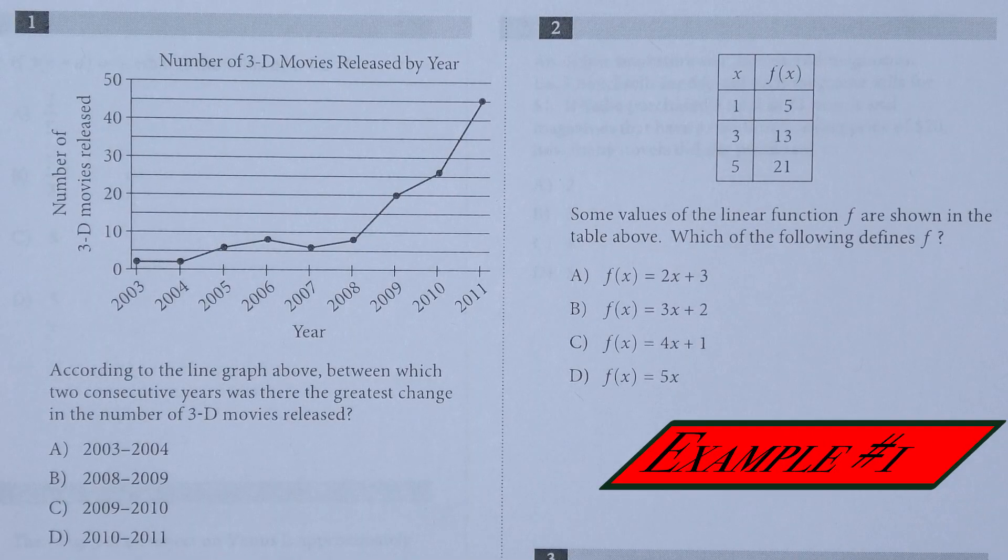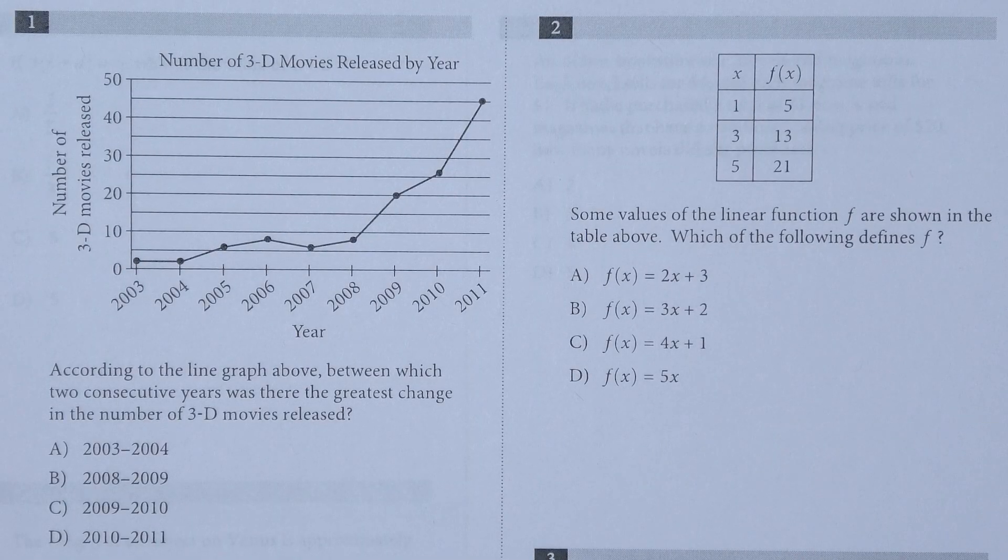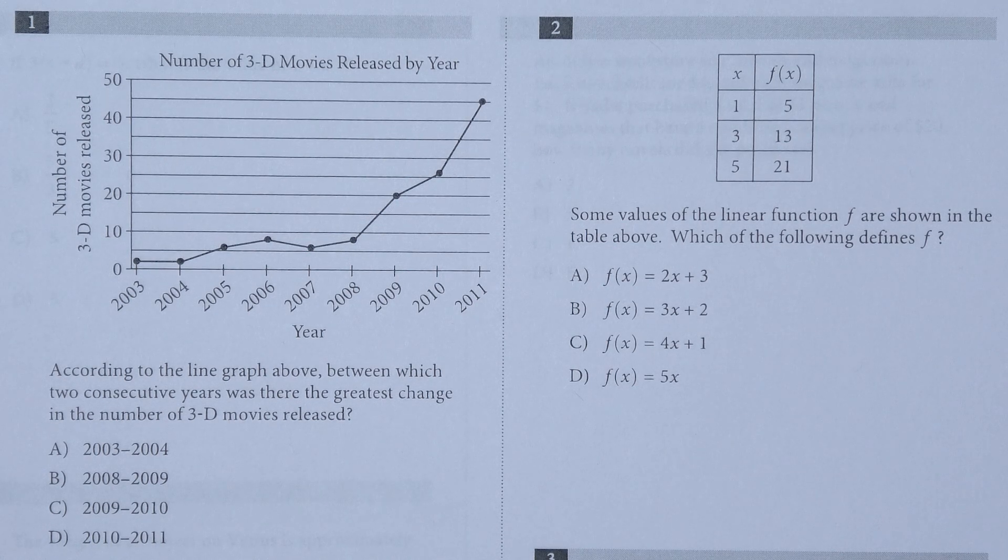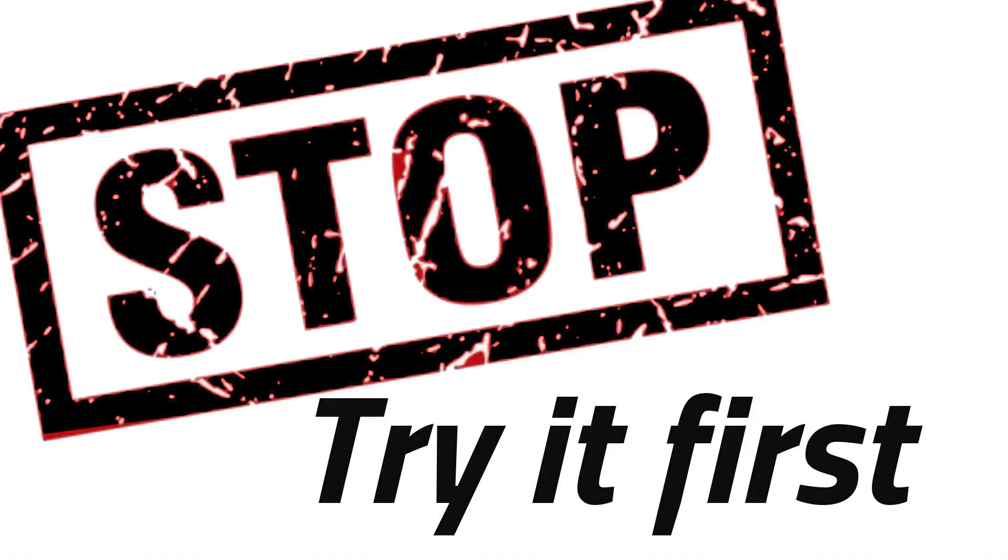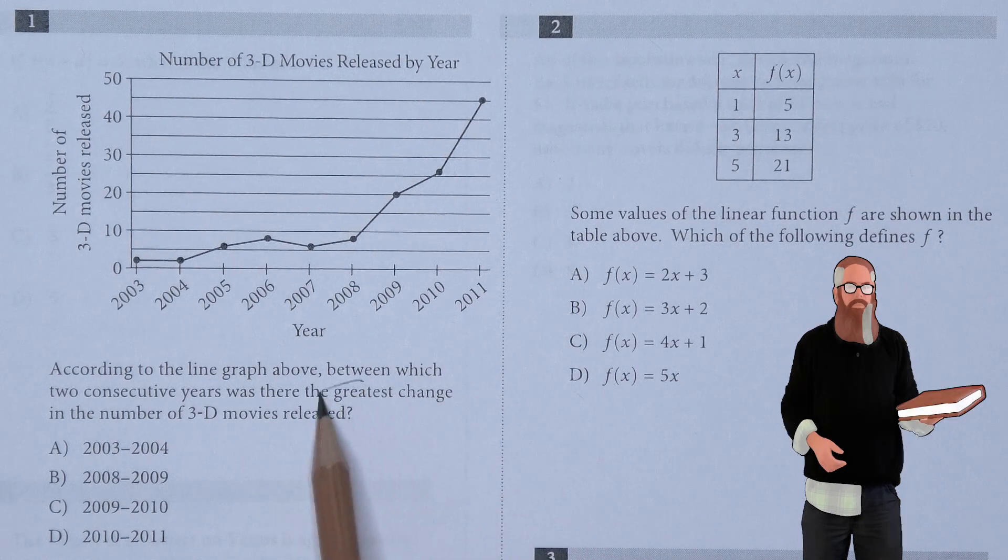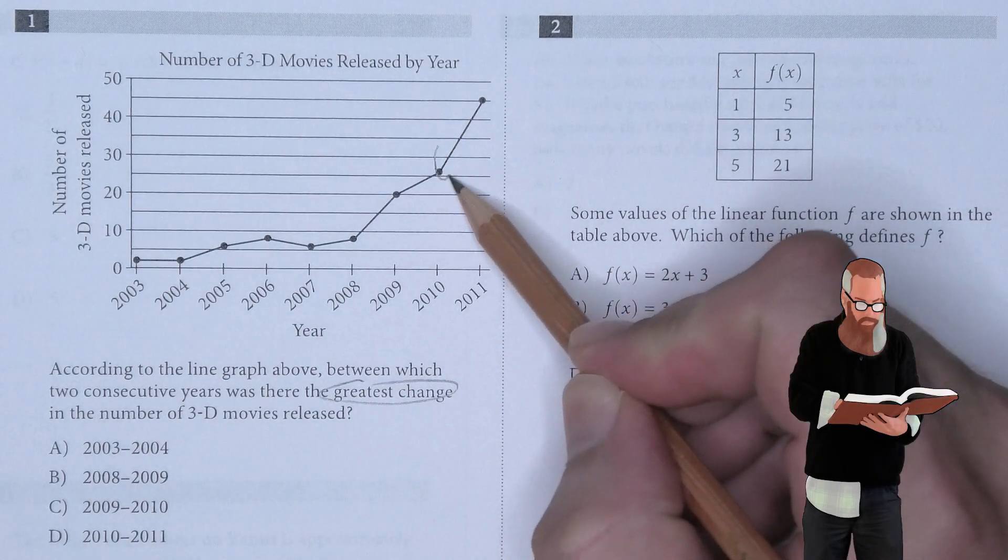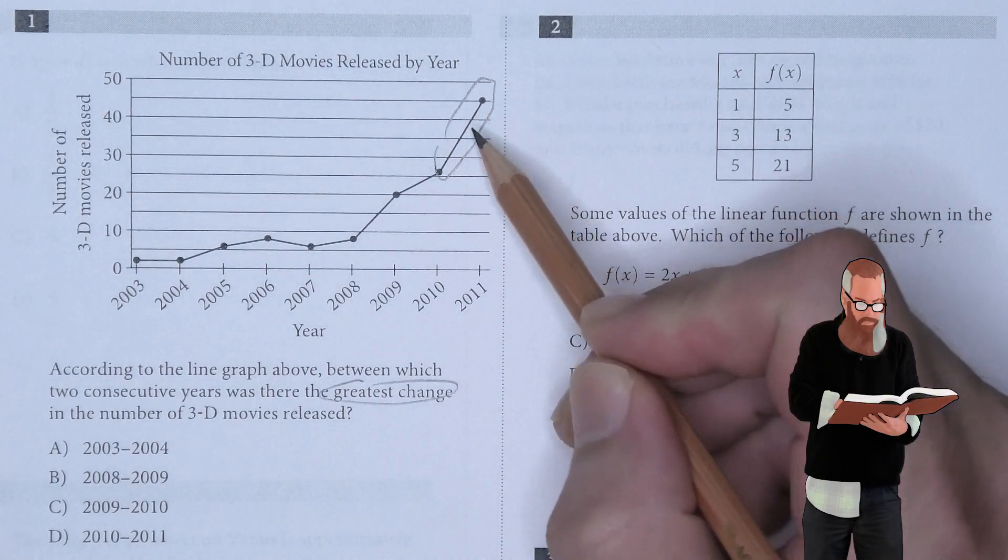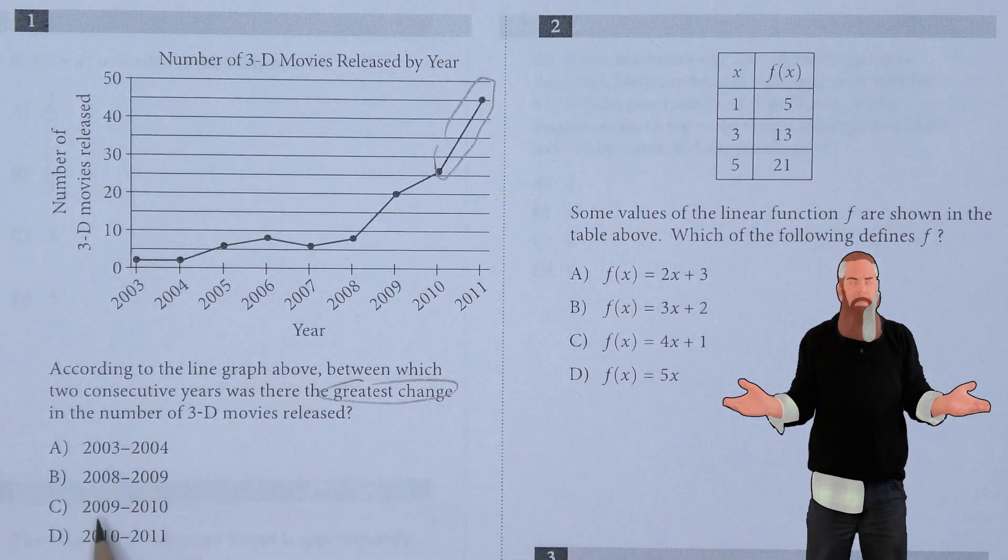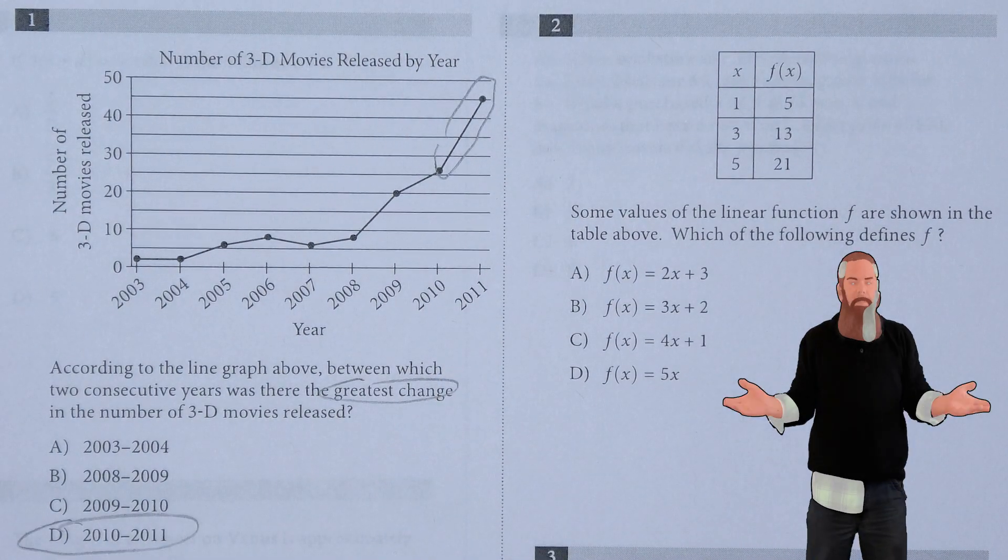According to the line graph above, between which two consecutive years was there the greatest change in the number of 3D movies released? I think it's fairly obvious at this point in the graph, from 2010 to 2011, so D is the answer.